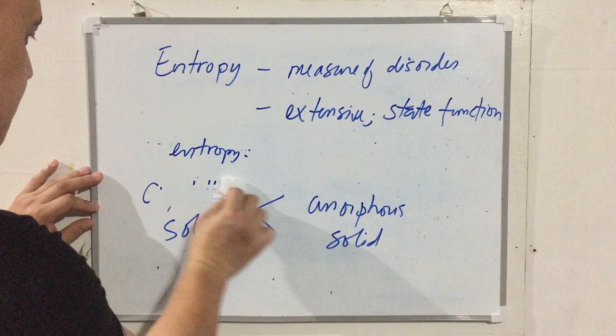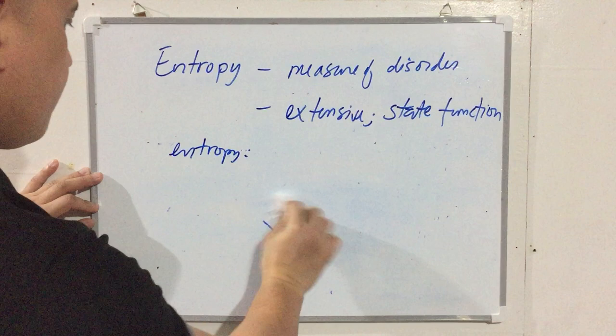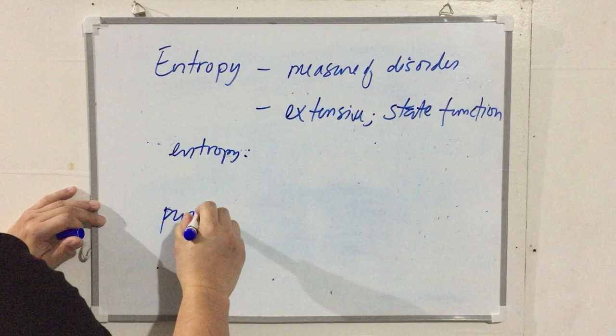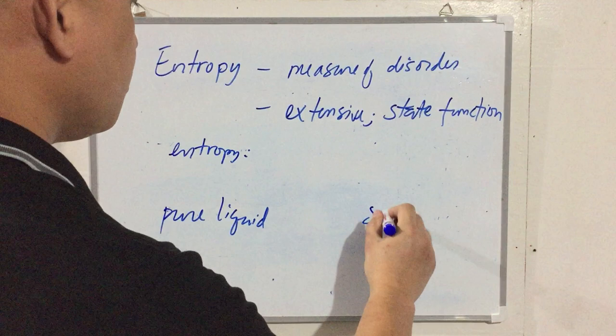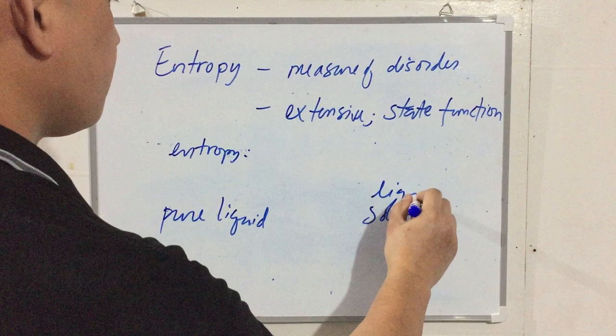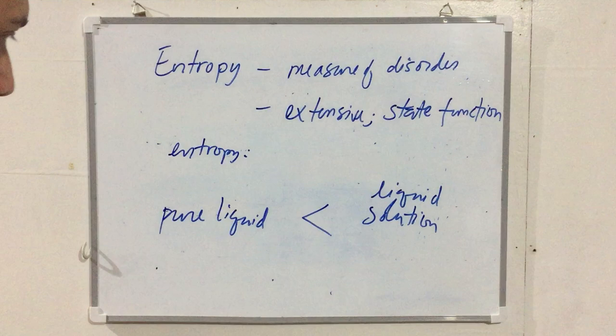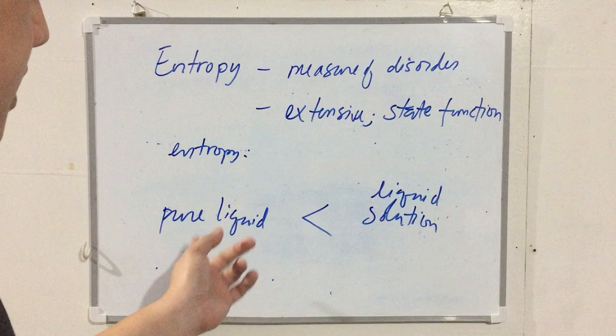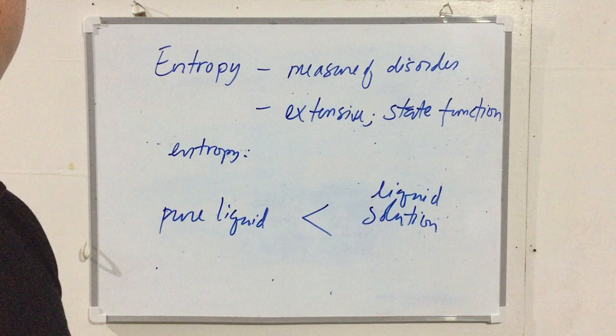In terms of liquids, comparing a pure liquid to a liquid solution: the liquid solution has higher entropy because it has more components — it's a mixture. As the number of components in the system increases, the entropy also increases.